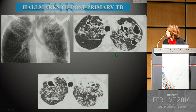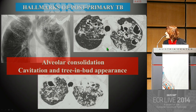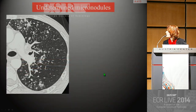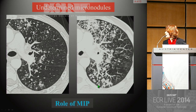The hallmarks of post-primary TB are therefore alveolar consolidation of variable size, cavitation, and tree-in-bud appearances, mainly located at the apical and posterior parts of the upper lobe as well as the apical segment of the lower lobe. Faced with undetermined micronodules, maximum intensity projection is very useful because it allows perfect detection of centrilobular micronodules with tree-in-bud appearances, and their characteristic centrilobular location not respecting the subpleural area.